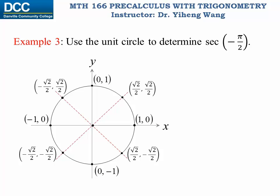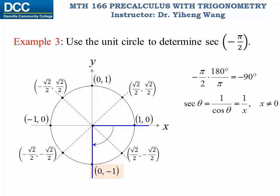We do the similar thing for this example. We need to determine secant of negative one-half pi. Converting to degrees gives negative 90 degrees. We draw it in standard position; the terminal side intercepts the unit circle at the point where the x-coordinate is zero and the y-coordinate is negative one. According to the definition, secant theta equals one over x. Since x equals zero, secant of negative one-half pi is undefined.